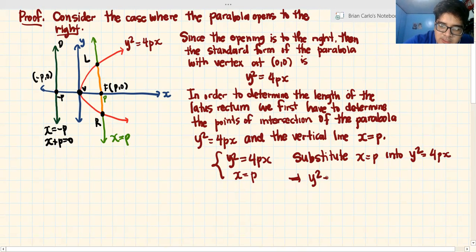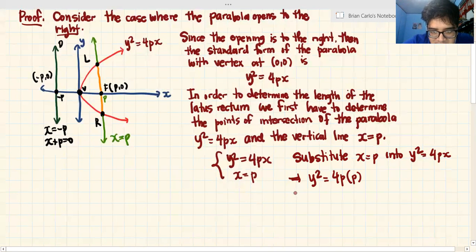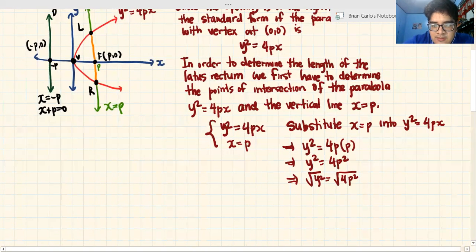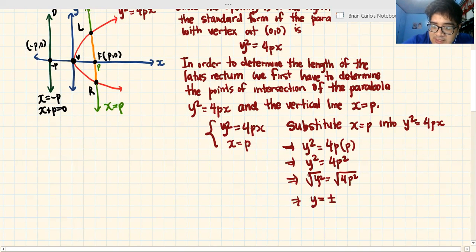Substitute x = p into y² = 4px. What happens? This implies that y² = 4p multiplied by p, which is 4p². Extract the square root of both sides. y = square root of 4p². This implies that y = ±2p. Why 2p? Because square root of 4 is 2, square root of p² is p. So there are two cases.